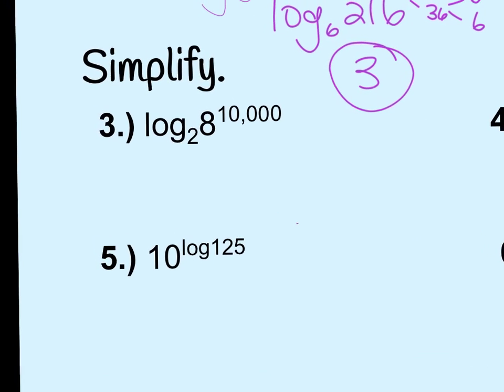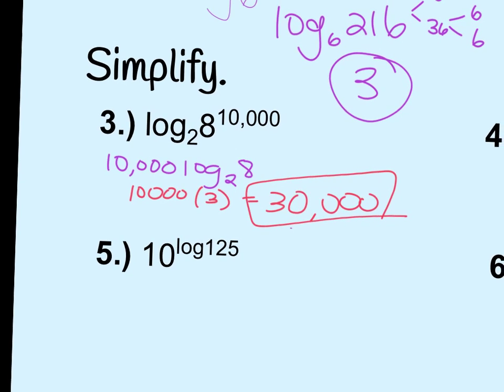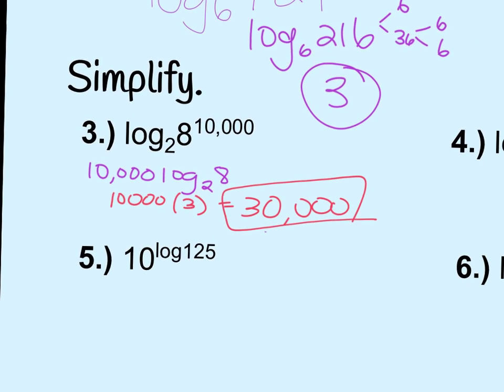Okay, number 3. So this is now in one log, which means I can expand it, or simplify it any way I can. So what happens when I've got the exponent? It goes to the front, so this would be 10,000 log base 2 of 8. What is log base 2 of 8? 3. So this becomes 10,000 times 3, which is 30,000. Questions on that one?